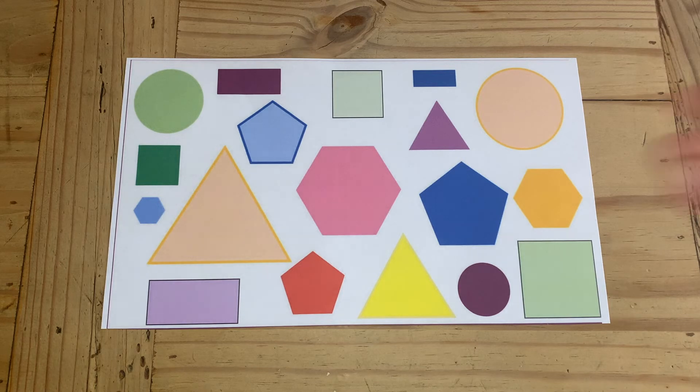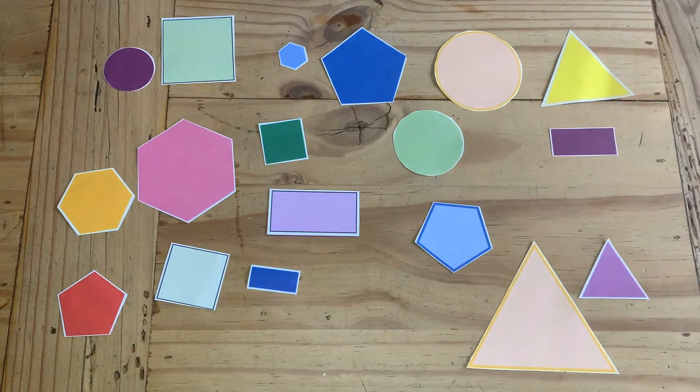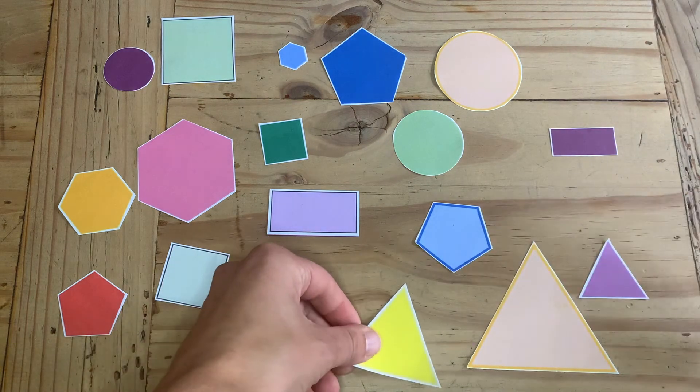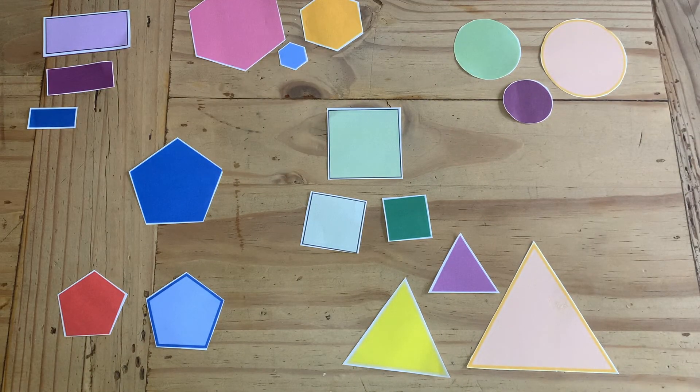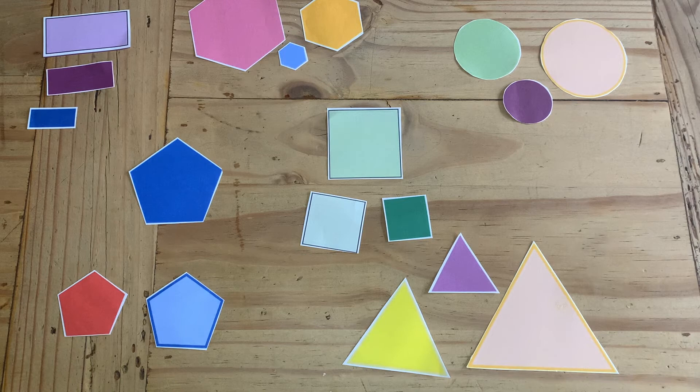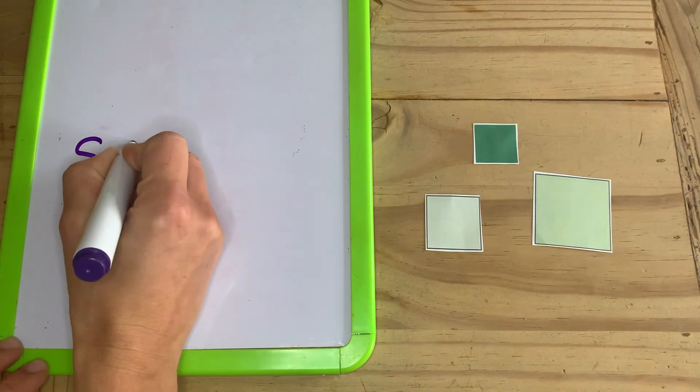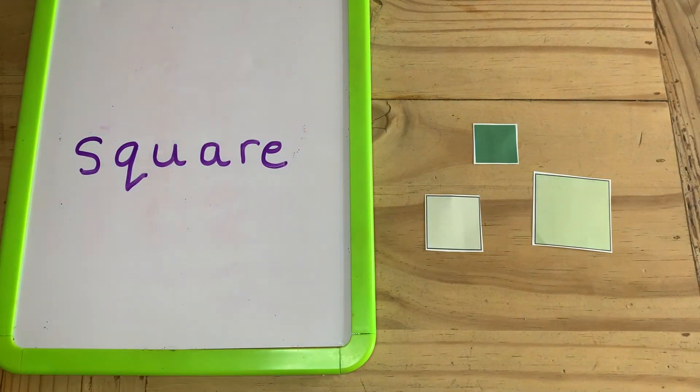Why not print this page and cut all the shapes out and get your children to sort them into groups? Can they find all the triangles, all the squares, all the rectangles and when they've sorted them can they label the different groups to tell you what shape they are?